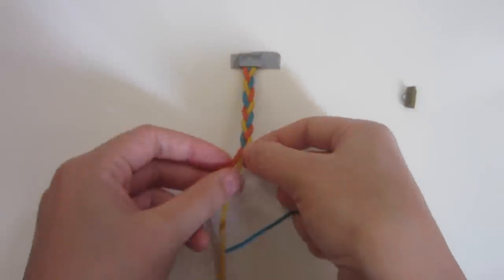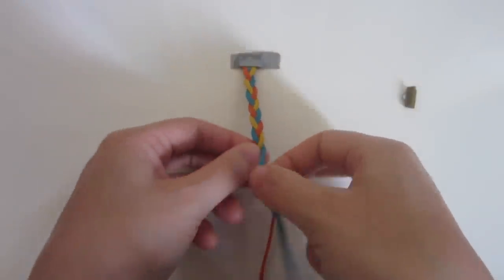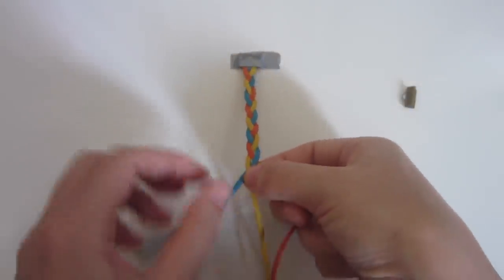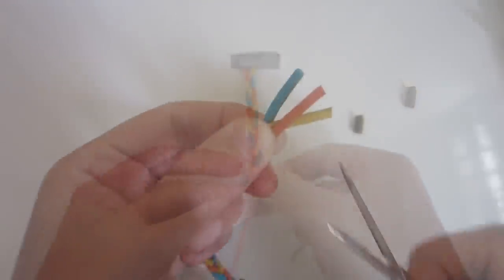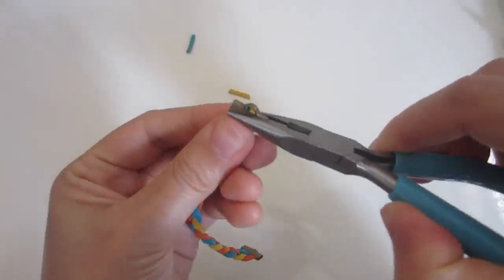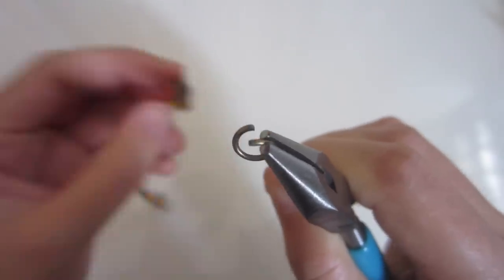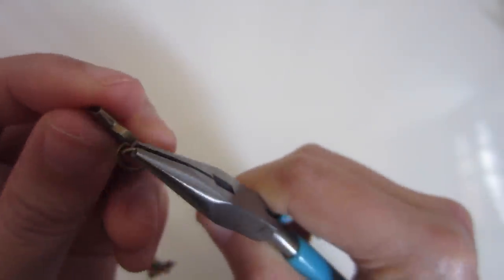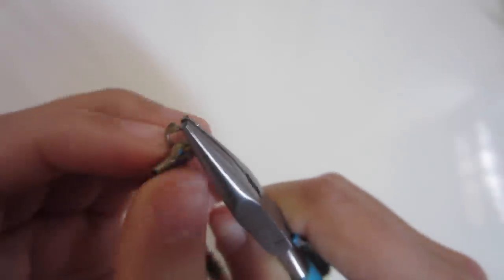Once you've reached your desired length, trim the ends. Put the other clamp on and close it up. Now open a jump ring, slip it on the clamp, and close it up.